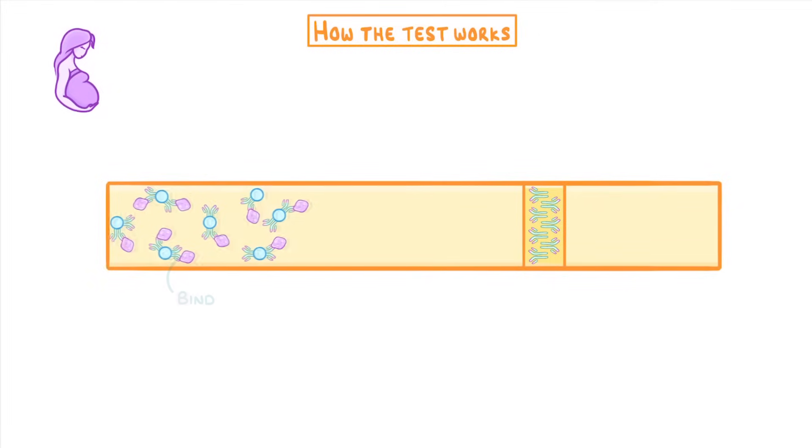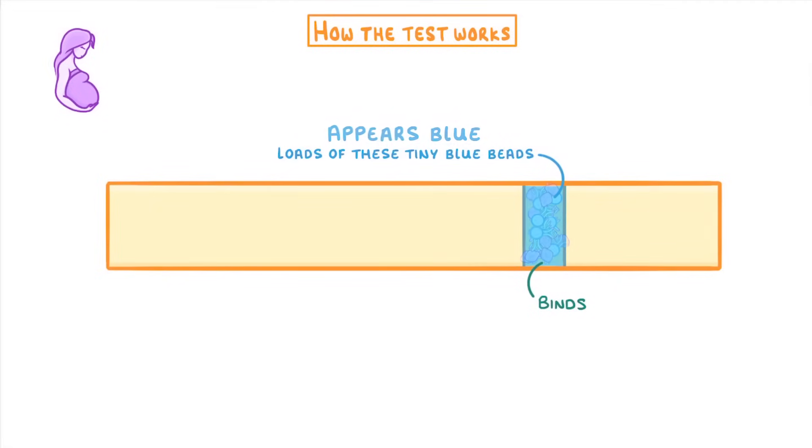So now, when the blue beads flow over the test strip, the HCG that they're carrying binds to the fixed antibodies as well, and the beads get stuck in place. By trapping loads of these tiny blue beads, the entire strip appears blue. And it's this blue strip that indicates a positive test result.